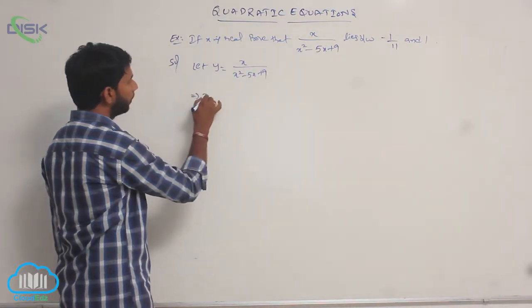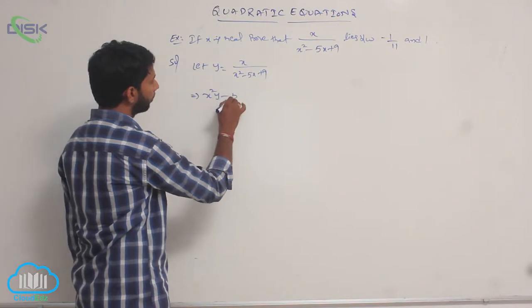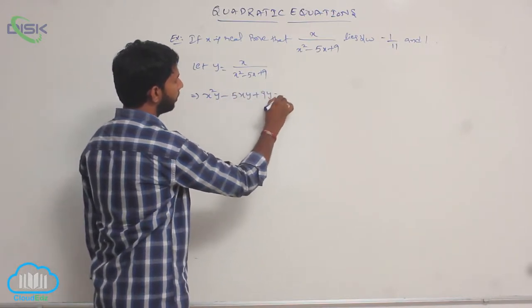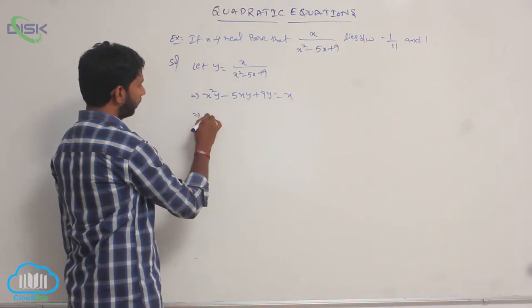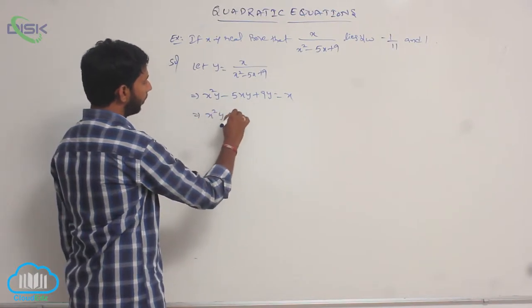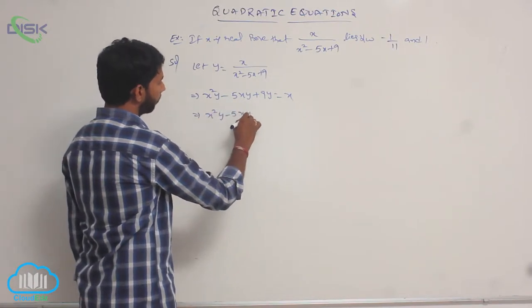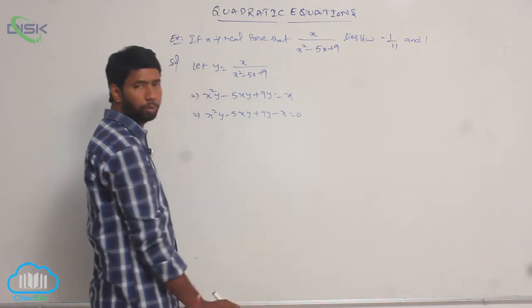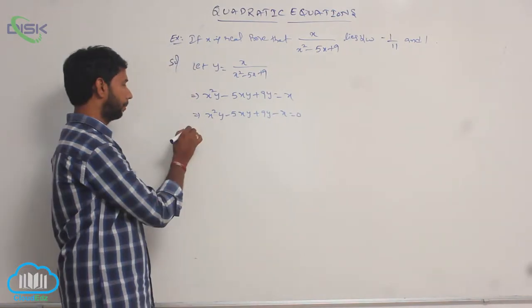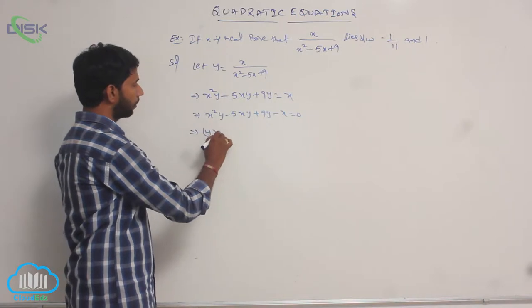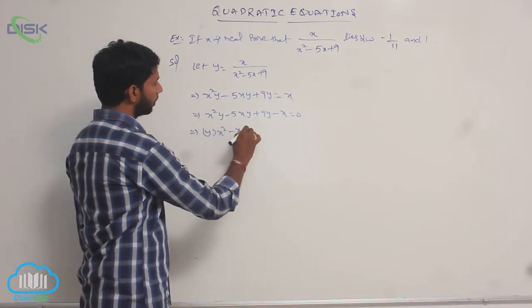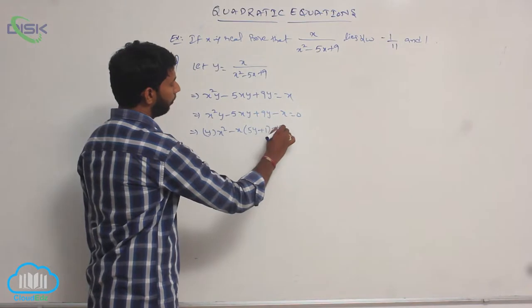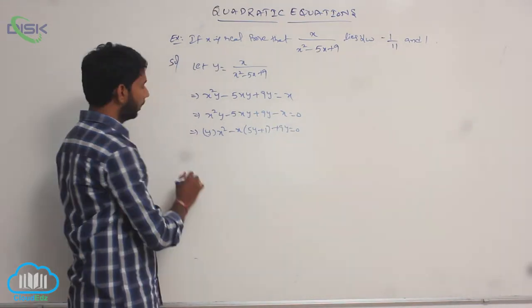Cross multiply the terms: x² y - 5xy + 9y = x. That is, x² y - 5xy + 9y - x = 0. Rearranging: y(x²) - x(5y + 1) + 9y = 0.